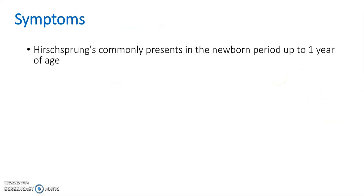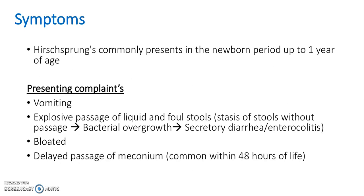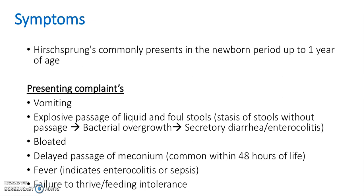So what are the symptoms? Hirschsprung's commonly presents in the newborn period up until about a year of age. Normally there'll be vomiting, explosive passage of liquid and foul stools. The stasis of the stools without passage leads to bacterial overgrowth and secretory diarrhoea and enterocolitis. The patient will be bloated and there'll be a delayed passage of the meconium, which is common within the 48 hours of life — the meconium is the first poo that a baby does. There'll also be fever, which indicates enterocolitis or sepsis, and the baby may have failure to thrive and feeding intolerance.